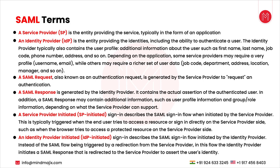Whoever is authenticating the end user trying to get into the application becomes your Identity Provider. An identity provider is the entity providing identities, including the ability to authenticate a user. The identity provider has to have the user's information — whether that user exists. It can have the user coming from Active Directory, LDAP, directory application users, or maybe created in its own environment. But the identity provider must have that identity in order to authenticate the user.